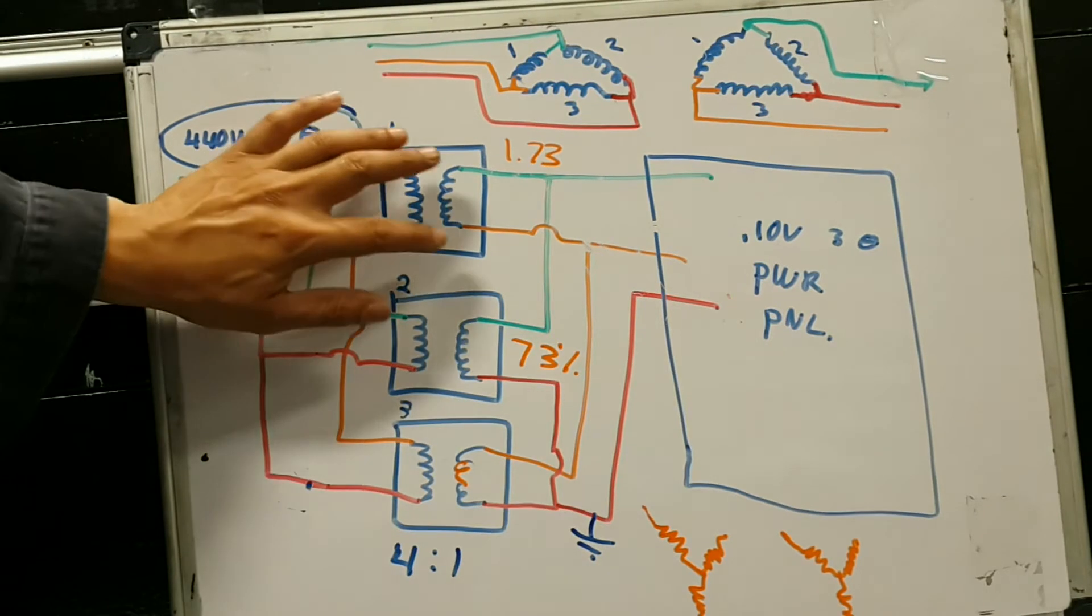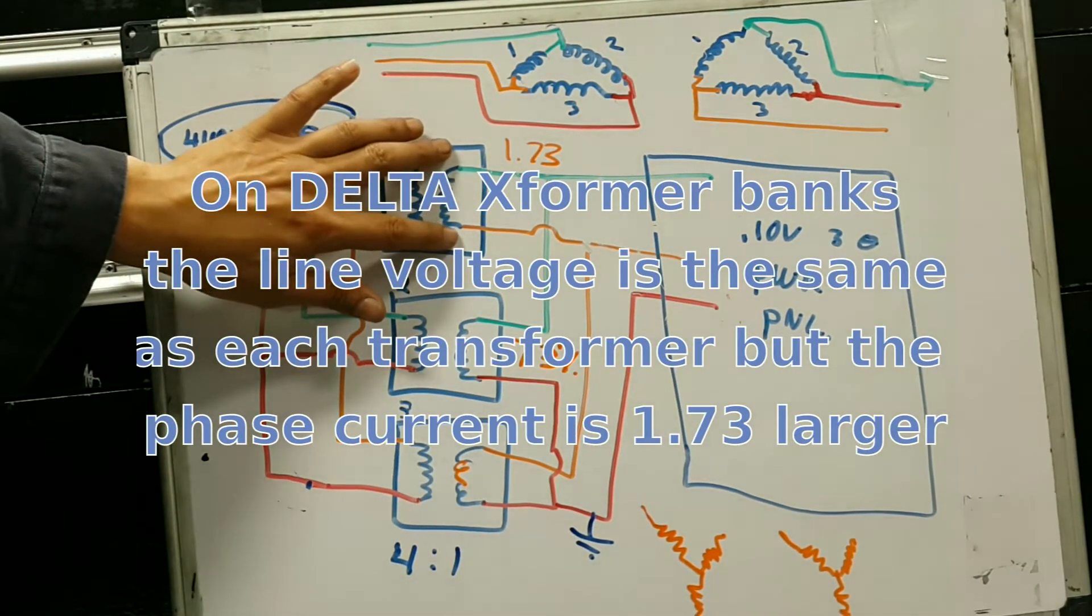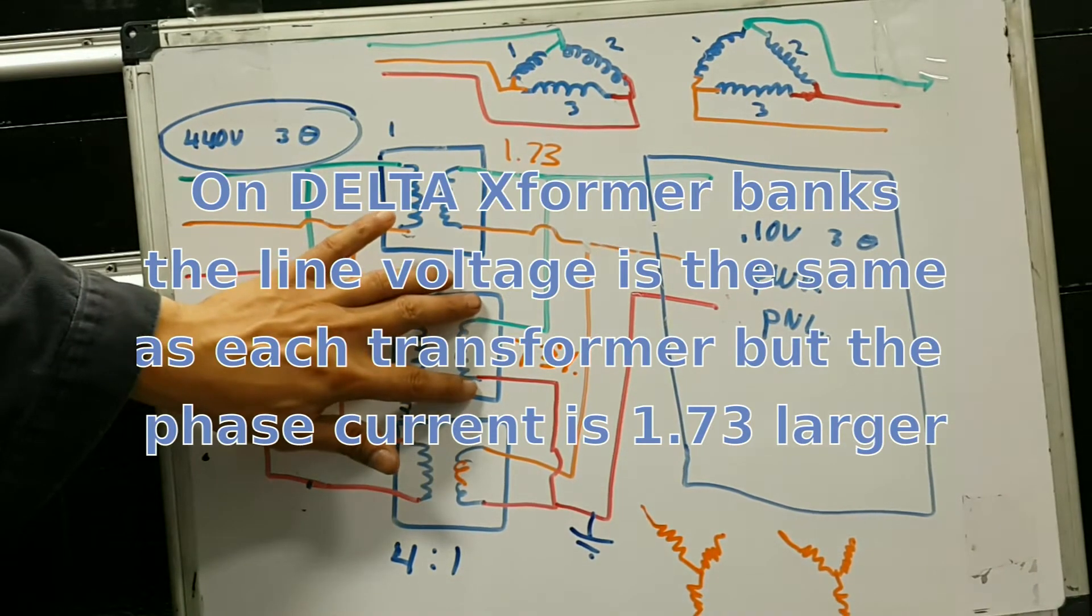The output voltage on a delta-delta is pretty constant, so if I had 110 volts over here, this transformer will give out also 110 volts.